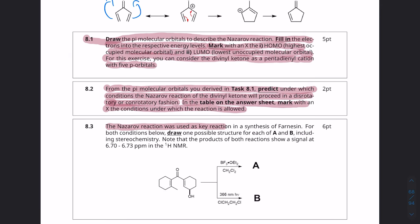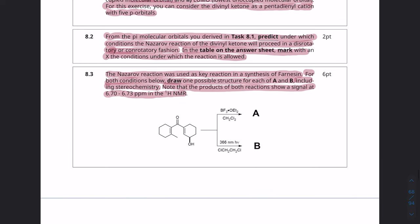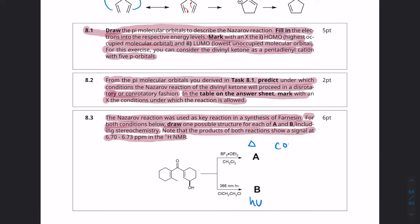The Nazarov reaction was used as a key reaction in the synthesis of Farnasin. For both conditions below draw one possible structure for each A and B including stereochemistry. Note that the products of both reactions show a signal at 6.7 to 6.73 ppm in the proton NMR. So we have this divinyl ketone and A is reacting it with boron trifluoride in DCM and B reacts it in the presence of light with DCE dichloroethane. So the important thing to realize here is that A is going to be under thermochemical control and B is going to be under light.